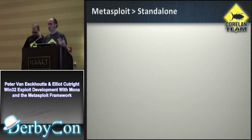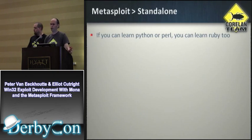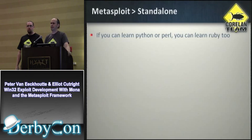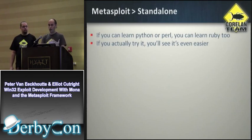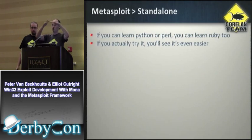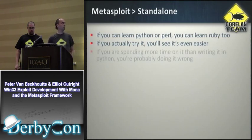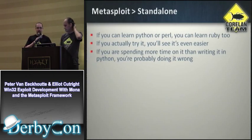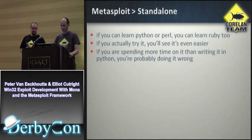Just a few more words to convince you to stop writing standalone exploits and write Metasploit modules instead. If you can learn to write code in Python and Perl, you can learn to do the exact same thing in Ruby — it's just different syntax. If you actually try writing an exploit in Metasploit, you'll see it's actually easier because you can use a skeleton or an existing module. The number of lines of Ruby you'll have to write is most likely very limited.